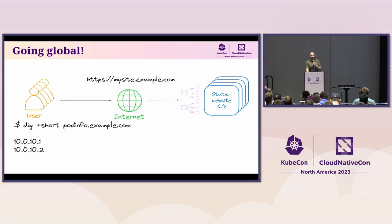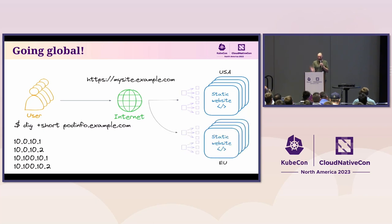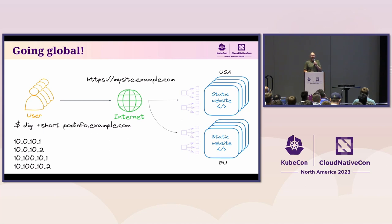And then they went global. They still only had four users, but two were in Europe and two in North America. So they duplicated everything — put up another Kubernetes cluster, deployed their pods, basically duplicated everything. Now they have four IP addresses. The client can go to any one of them — they're all totally valid.